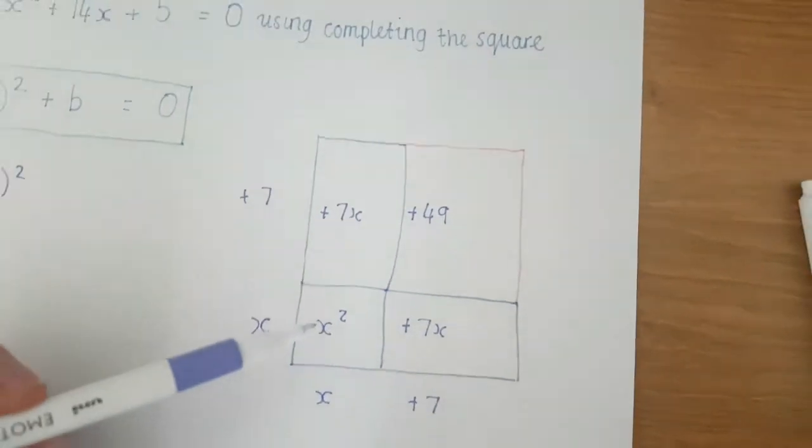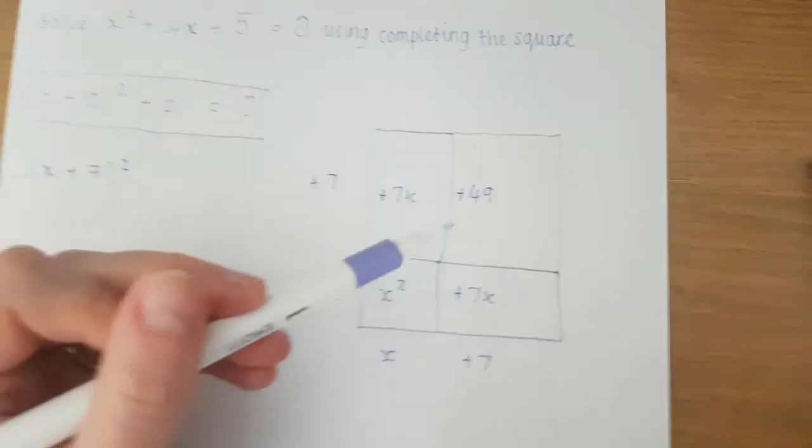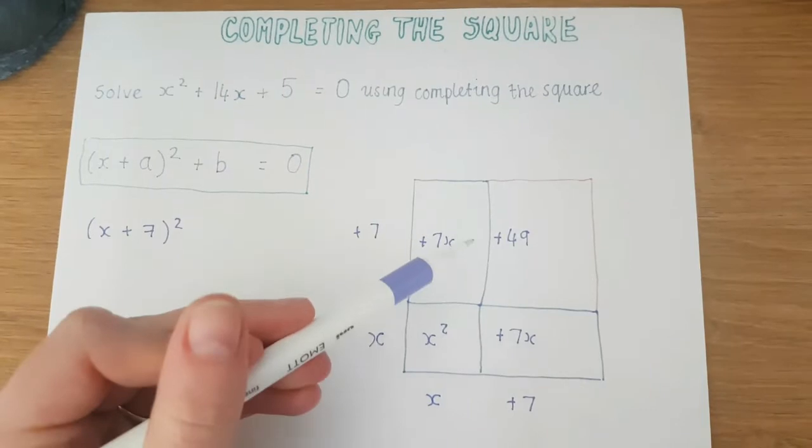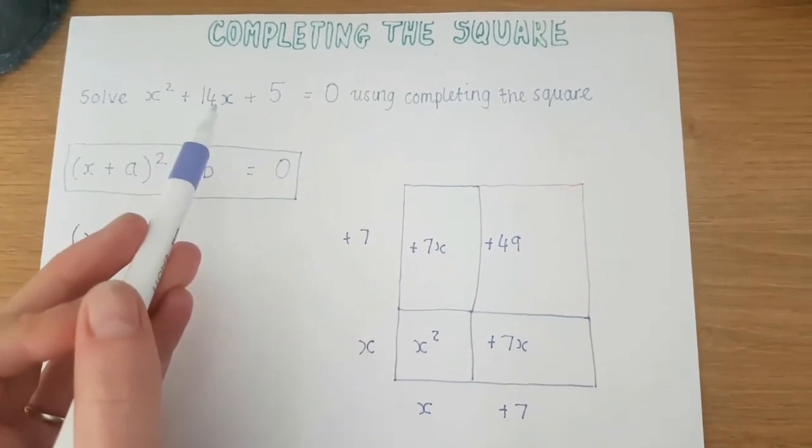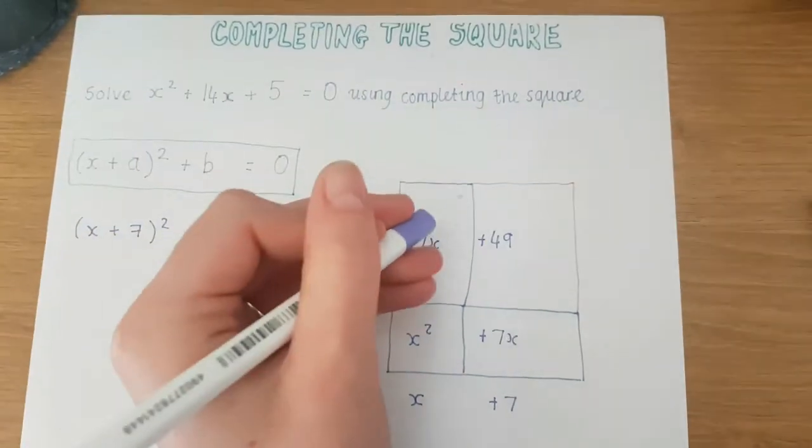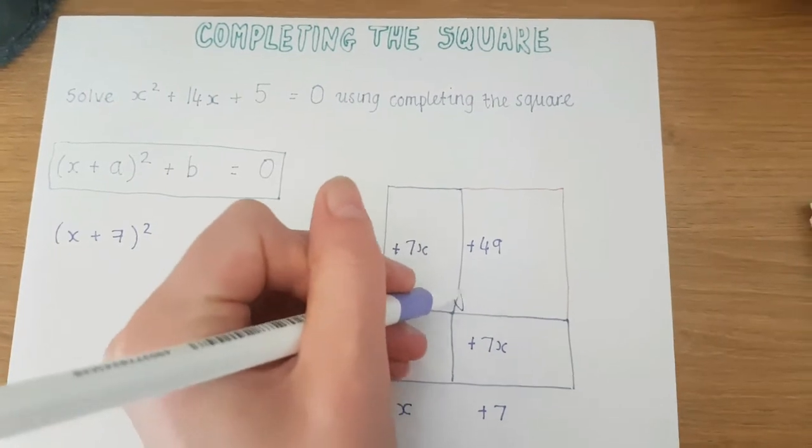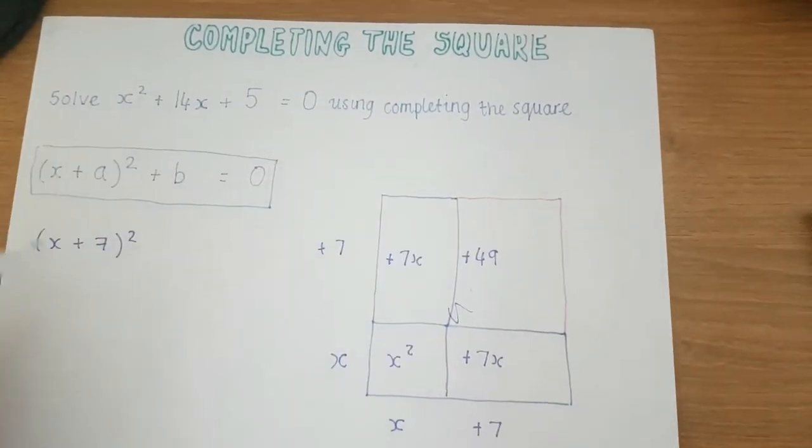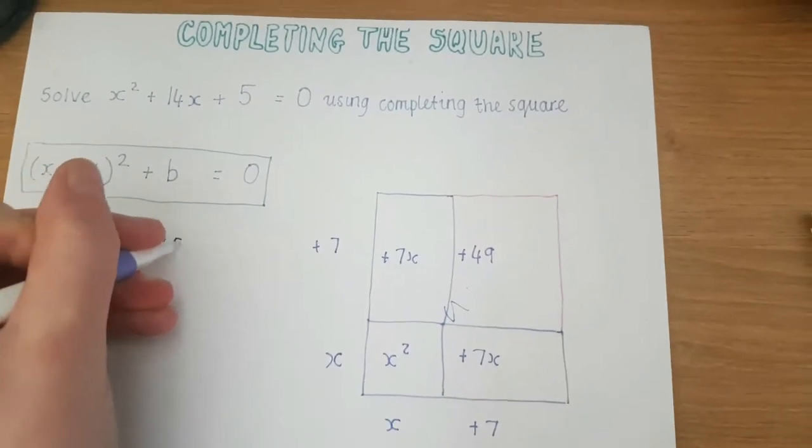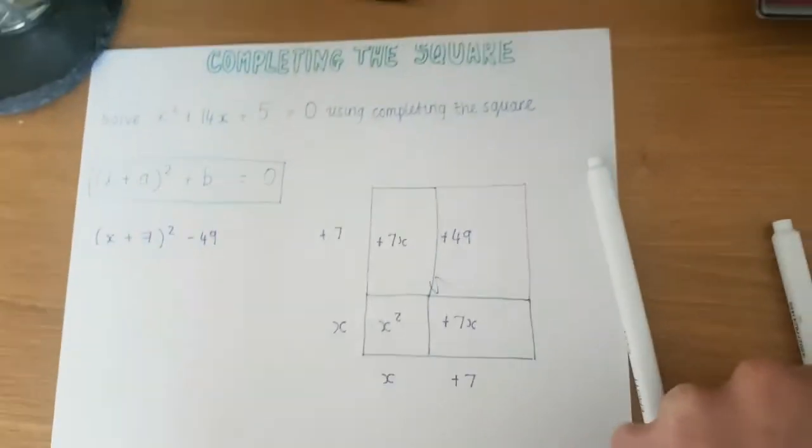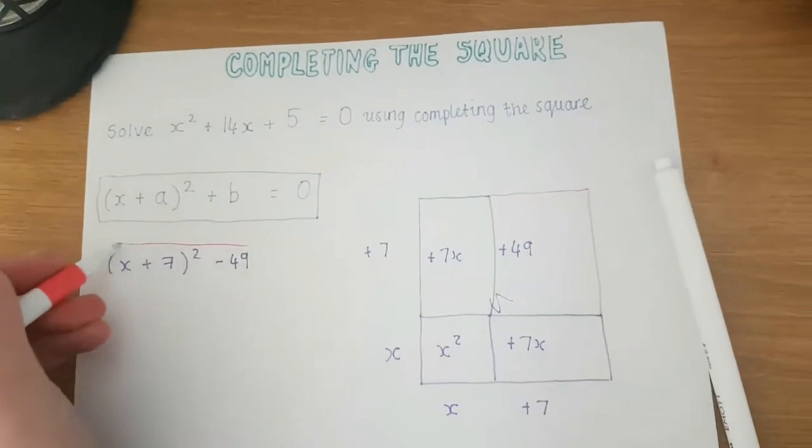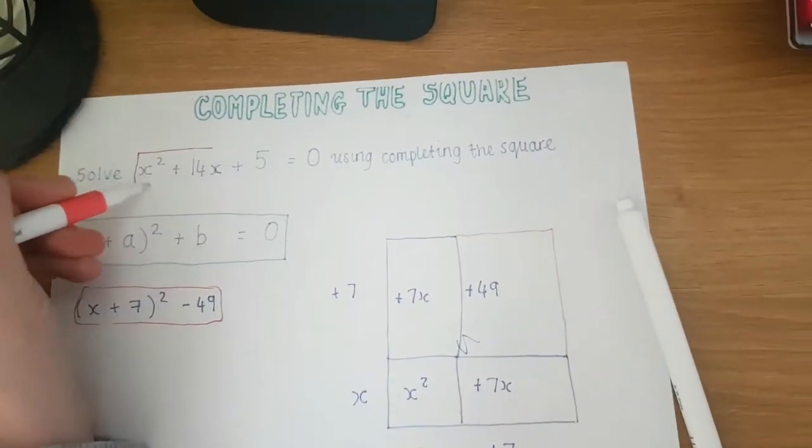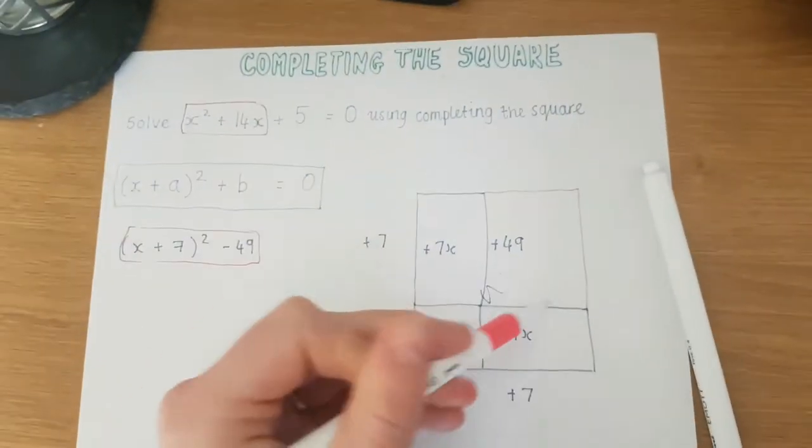Now if I add all of these together I get x² + 14x + 49 but I don't want x² + 14x + 49, I just want x² + 14x. So what I have to do is remove this square here from this in order to make this part equal to this part. So if I subtract 49 all of this part here is equal to this part here because we've taken away this extra square here.